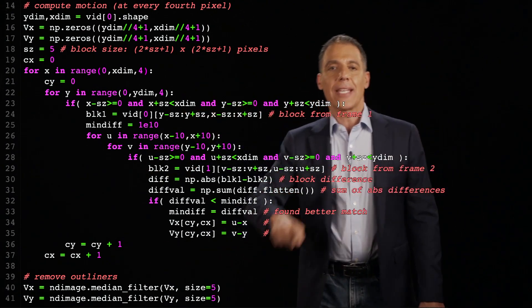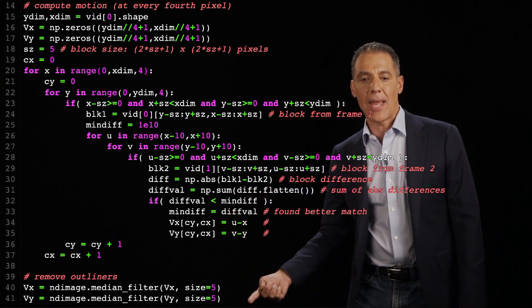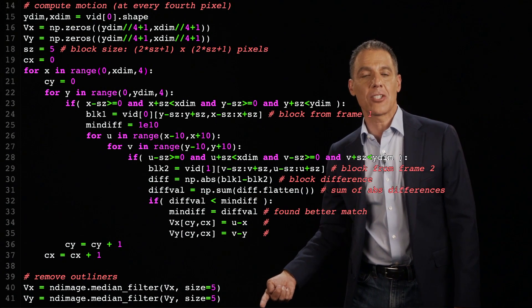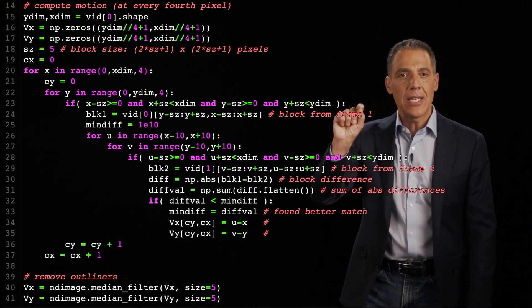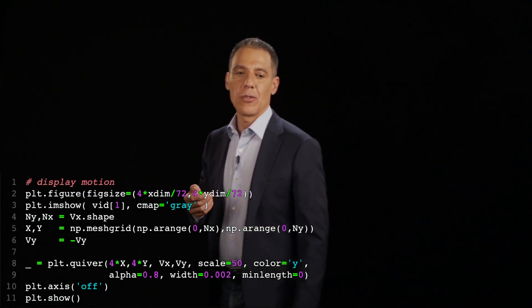And then do that again for every pixel. And then I've got that same little trick where I'm now going to median filter the estimated motions to integrate out any small outliers or noise. And now it's just a little bit of code to visualize.